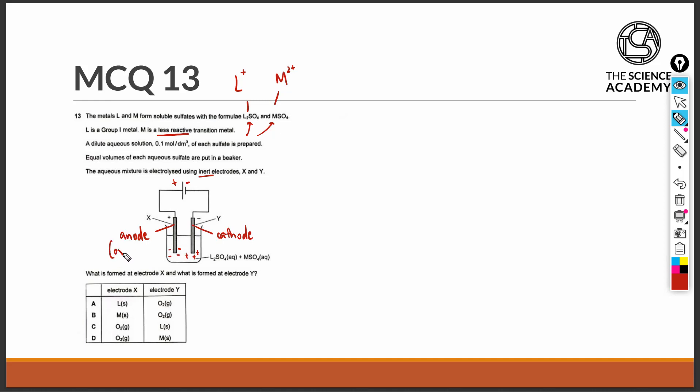At the anode, oxidation occurs, while at the cathode, reduction occurs. In the electrolyte, the ions present are the metal ions, the sulfate anion, and because it is an aqueous solution, H⁺ cations are also present, and hydroxide anions are present as well.